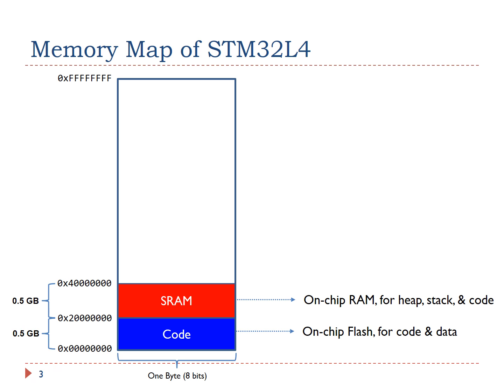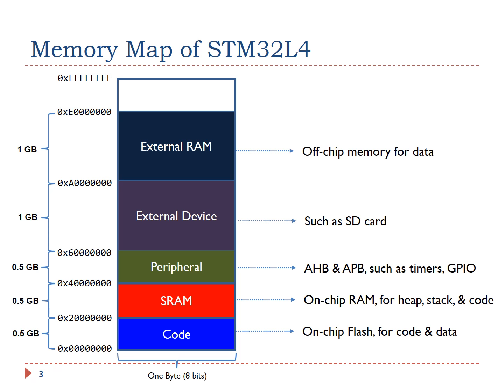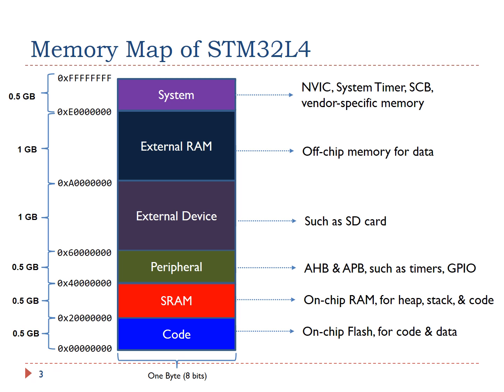The third region is peripheral. These peripherals include advanced high-performance bus peripherals such as GPIO and ADC, or advanced peripheral bus peripherals such as timers and USART. The next region is for external devices such as SD cards. The next is external RAM, which is an executable region for data — it is off-chip memory primarily used to store large data blocks, with a total of 1 GB. The last region is the system region, which includes the NVIC, system timer, system control block, and vendor-specific memory.